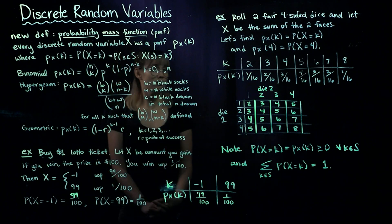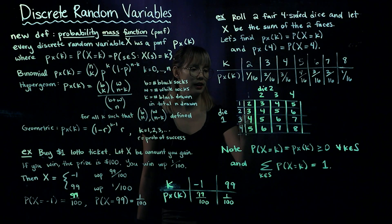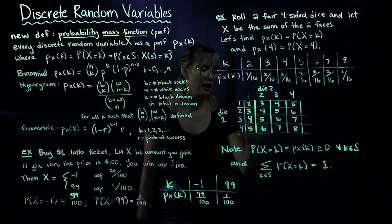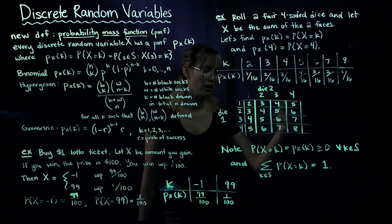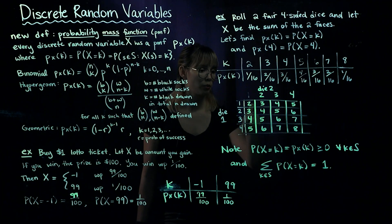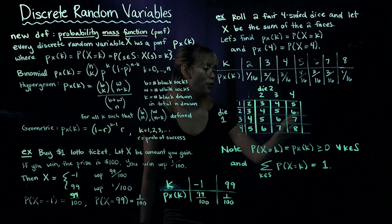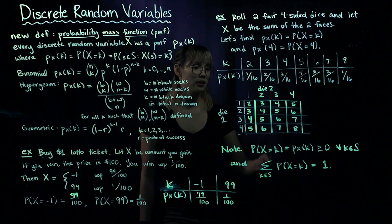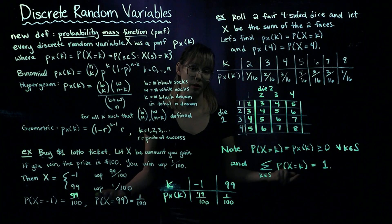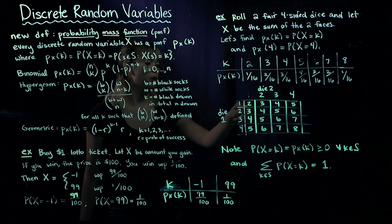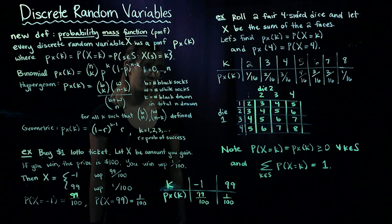Since these dice are fair, each entry in the table is equally likely. The probability of any specific outcome like (1,1) or (3,3) is 1/16. To find the probability of getting a sum of 2, we count how many 2's appear and divide by 16. We see 2 only once, so P(X=2) = 1/16.